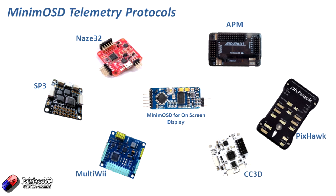Let me explain what that looks like so it's clearer for those of you about to play with MAVLink or having this problem. Here on the screen we have lots of different flight controllers, the majority of which we've done series with on the channel. If you want to find out more about the NAZE32, the APM, Pixhawk, CC3D, Multiwii or the SP3, you can find series on the channel. In the middle is our friend the MinimOSD, because it will actually connect and run with every single one of these boards — but not with the same firmware.